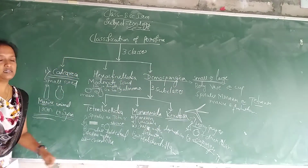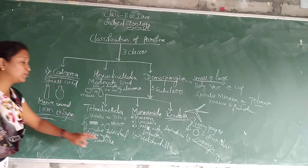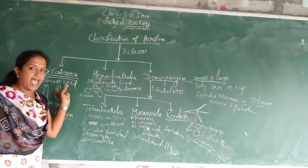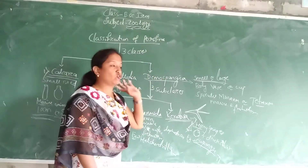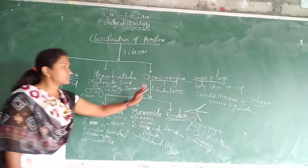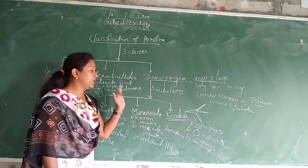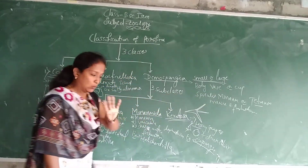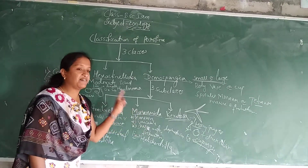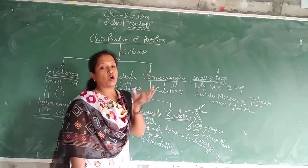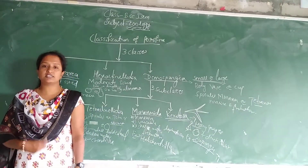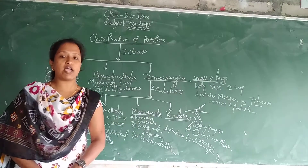This is the classification of Porifera with examples up to classes. The main classification divides Porifera into three classes: Calcarea, Hexactinellida, and Demospongia. Demospongia has three subclasses divided by spicule type: Tetractinellida has four spicules, Monaxonida has one spicule, and Keratosa has horny sponges. In the next class, we will continue with Porifera. Thank you.